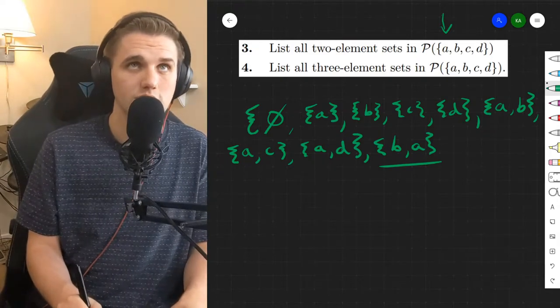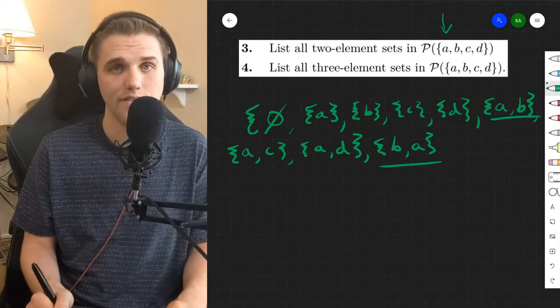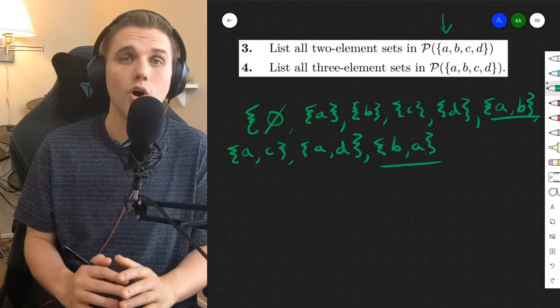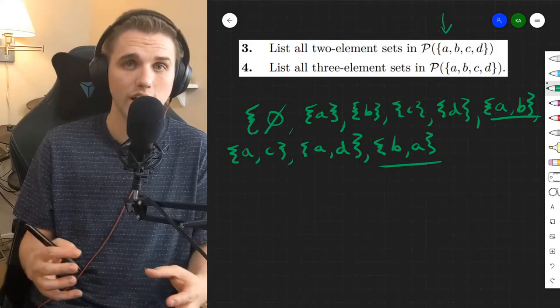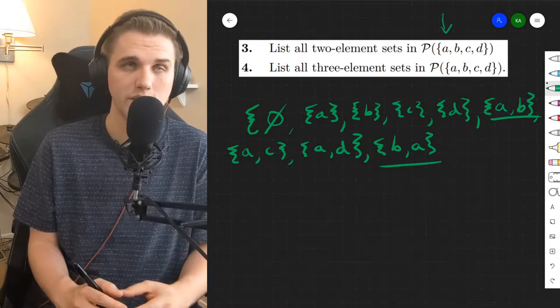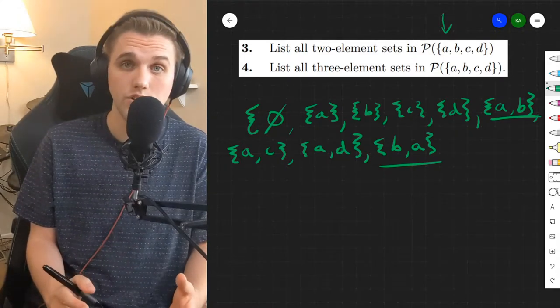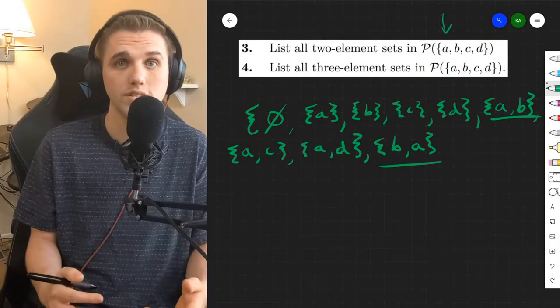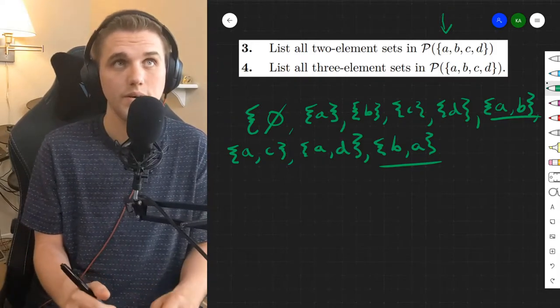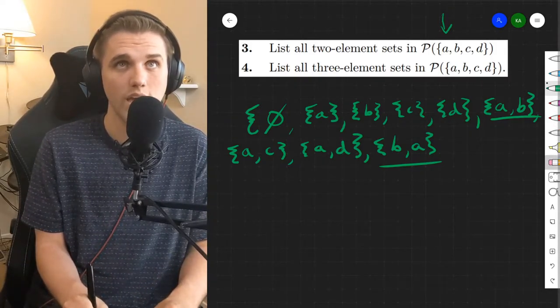We can't include this in the set because we already have it. Keep in mind that with sets there are no repetitions allowed. You can have a collection of objects so long as there's no repetition. Multi sets you're allowed to do stuff like this where you have multiple elements in a set that's the same element, but with sets you can't do that.